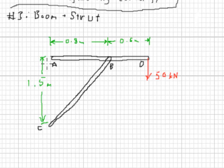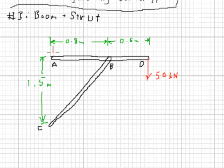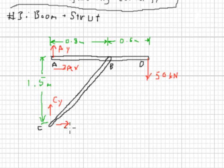The setup here shows a one-and-a-half meter height from A to C. From A to B is 0.8 meters, and from B to D is 0.6 meters. We remove the supports at A and C — they're both pinned — so we replace them with reaction force arrows: AY and AX at A, and CY and CX at C.